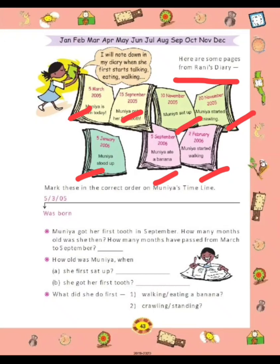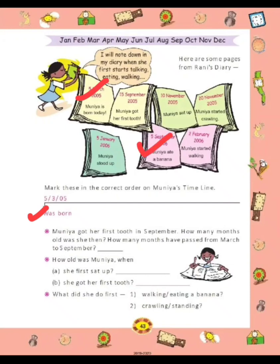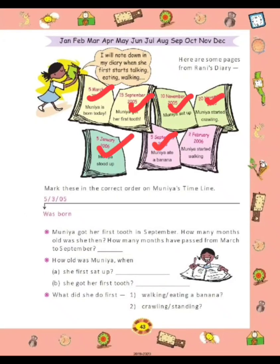Now she made a timeline — Muniya's timeline. In first: 5 March 2005. Next: 5 September 2005. After that: 15 September 2005. Next: 10 November 2005. And next: 20 November 2005. Next: 5 January 2006. And at the last: 2 February 2006.